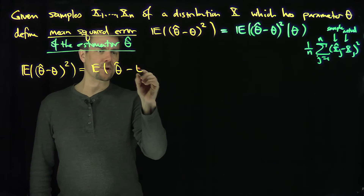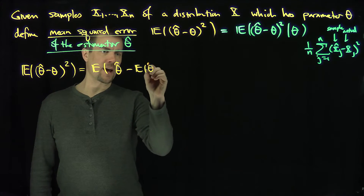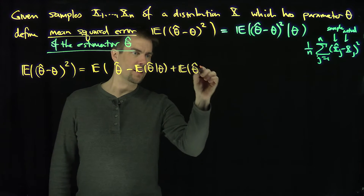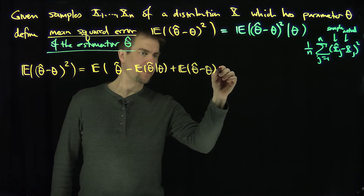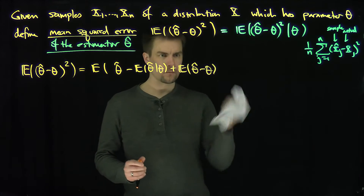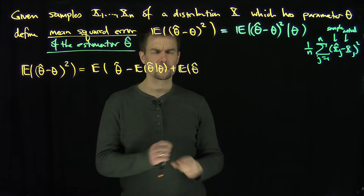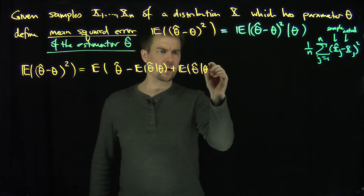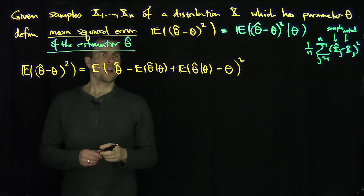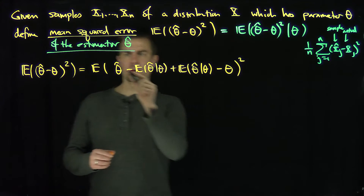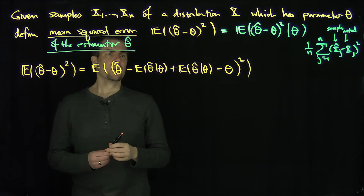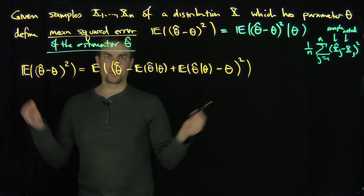I'm going to look at theta-hat and put in a minus expected value of theta-hat given theta. I'm going to add and subtract that quantity — so we have theta-hat minus expected value of theta-hat given theta, plus expected value of theta-hat given theta, minus theta — all squared. All I've done is added zero into this whole expression.